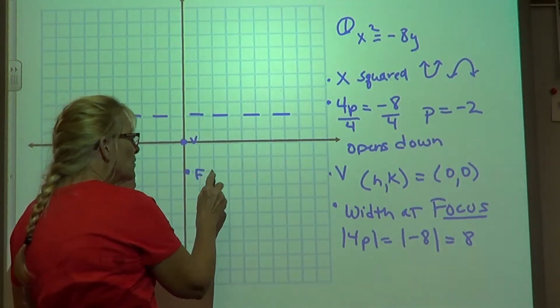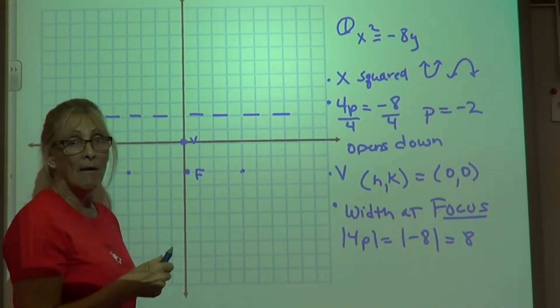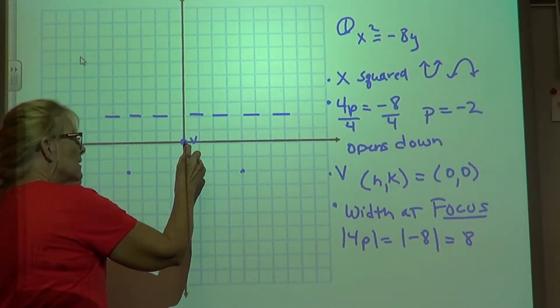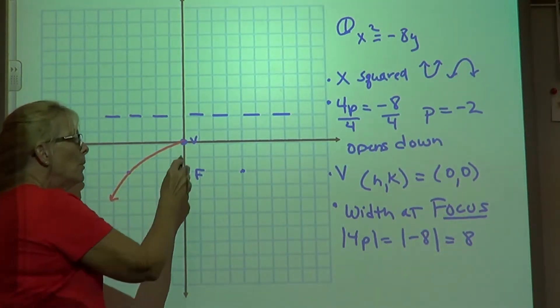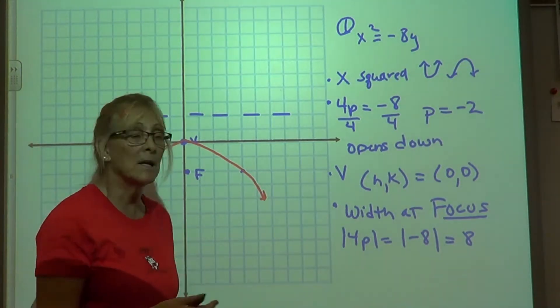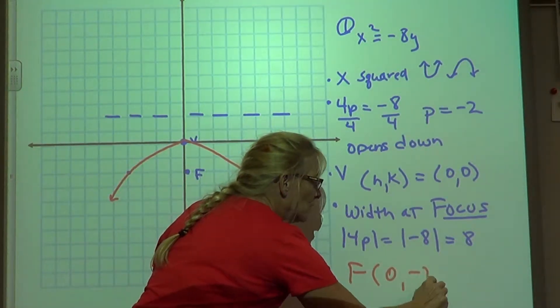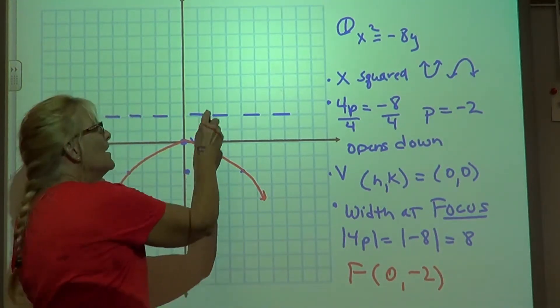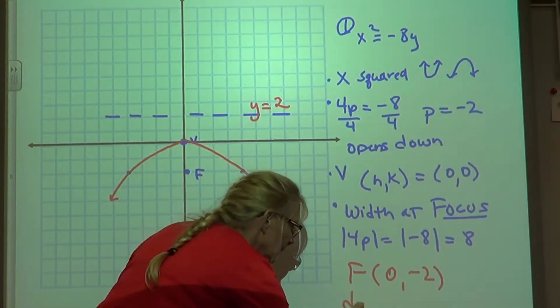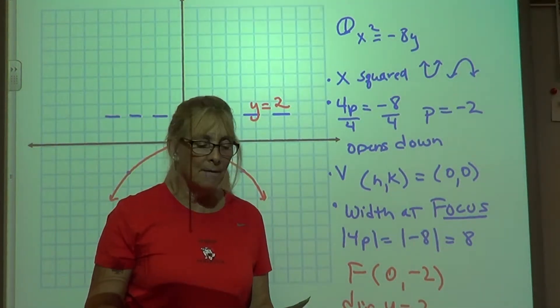So 4 units, 1, 2, 3, 4 to the right, and 1, 2, 3, 4 units to the left. Now I have my parabola. And we can take that and connect the vertex to one point, the vertex to the other point. You can now state the information of each piece. The focus is at 0, negative 2, and the directrix is at y equals 2, a horizontal line. That would be problem number 1 on the half-sheet.